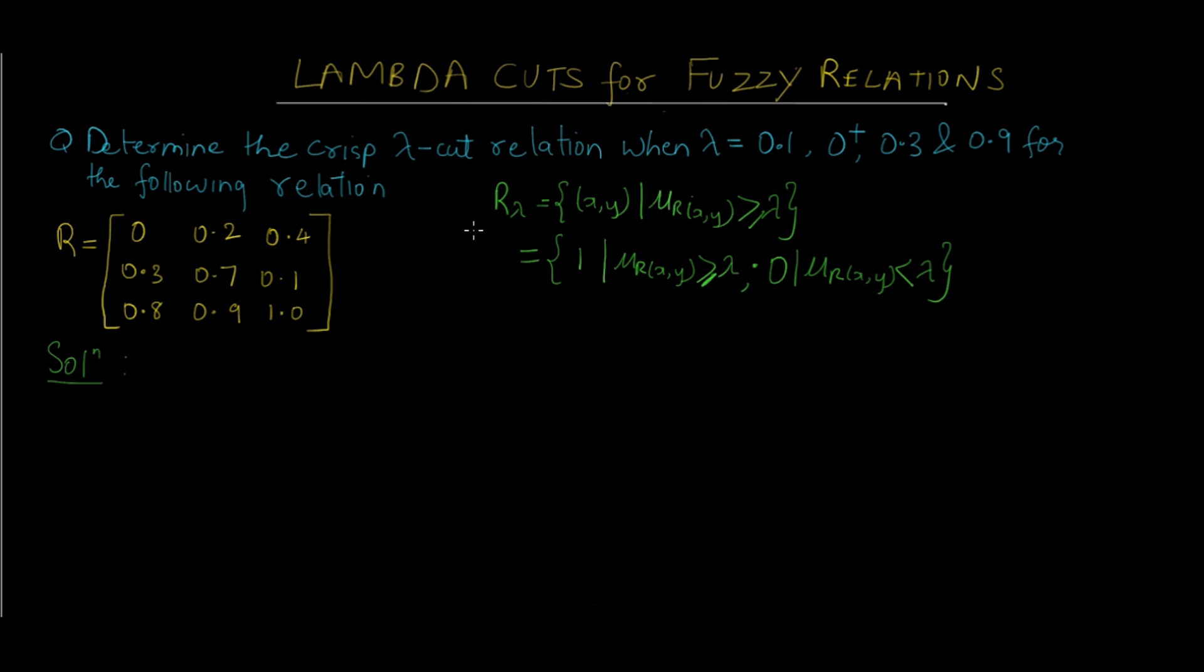As you can see on the screen, we've been given a question which I've written in blue. Determine the crisp lambda cut relation when lambda equals 0.1, 0+, 0.3 and 0.9 for the following relation. Here's a relation which is a fuzzy relation given by a matrix denoted by R, which is a 3×3 matrix. You can see all the membership values. We have to convert this fuzzy relation into a crisp relation based on lambda cuts with different values of lambda: 0.1, 0+, 0.3 and 0.9. In this green text I've written the general notation of how to convert a fuzzy relation to a lambda cut relation based on this formula.